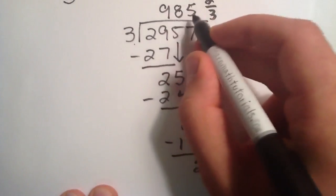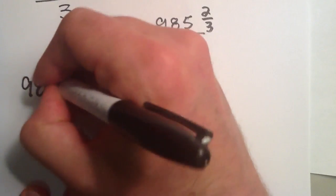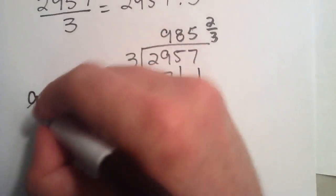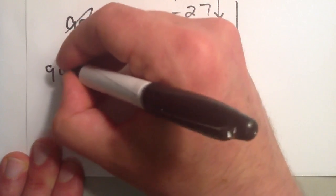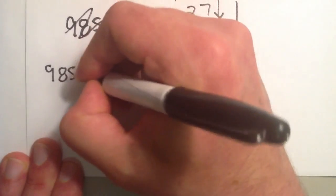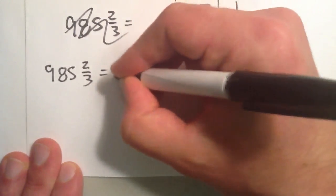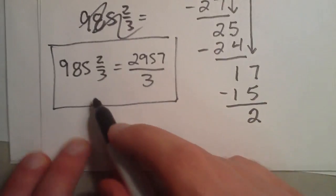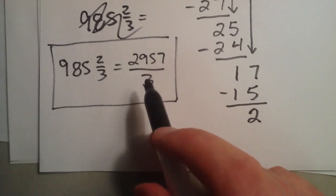So 985 and 2 thirds is equal to... let me just rewrite this here. 985 and 2 thirds is equal to 2,957 over 3. So this is really the same number. This is written in mixed form, and this is written in improper form.